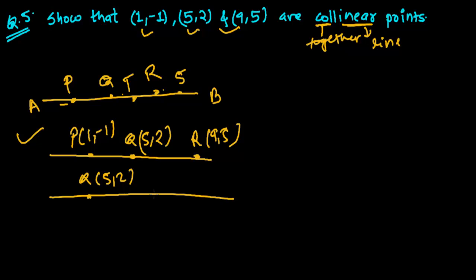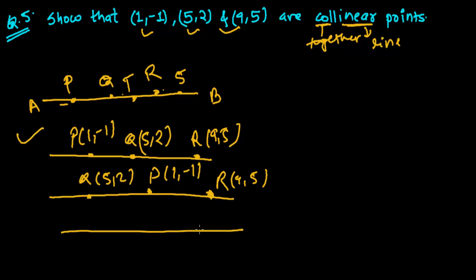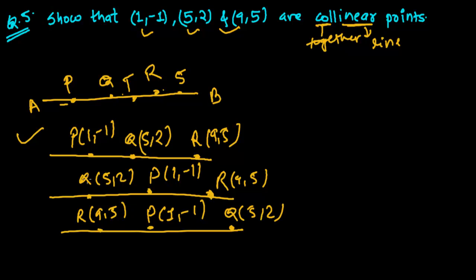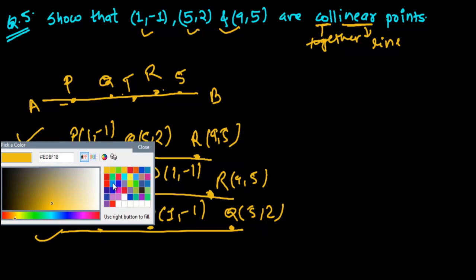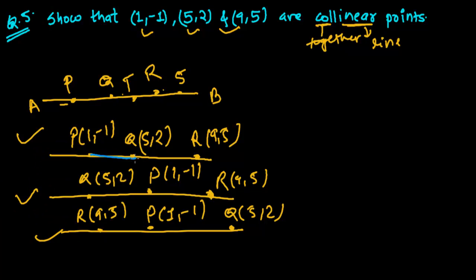It may also be arranged differently — for example, Q at (5, 2), P at (1, -1), and R at (9, 5), or R first then P then Q. In every case, when you add PQ and QR, the result equals PR — the whole line. So PQ plus QR equals PR.